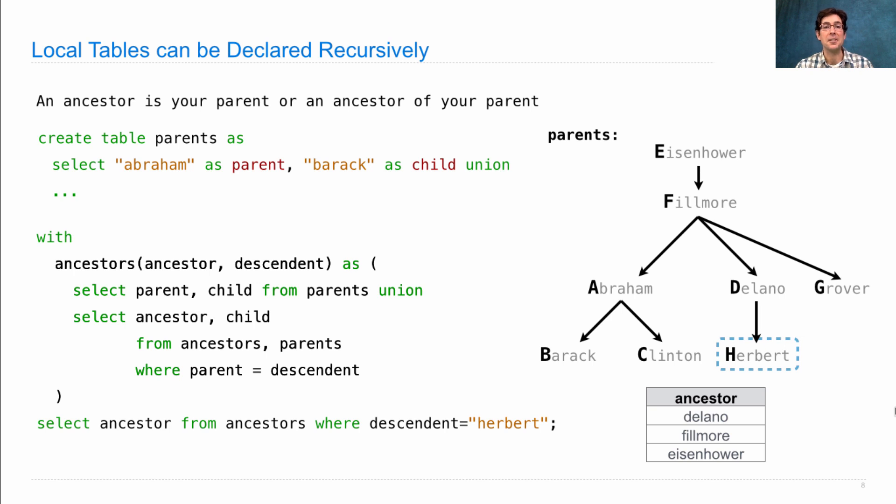Now this is a recursively defined table, because you can see that ancestors is built from ancestors. Wow. So what happens here?